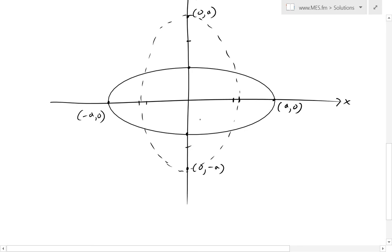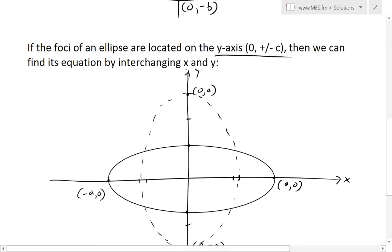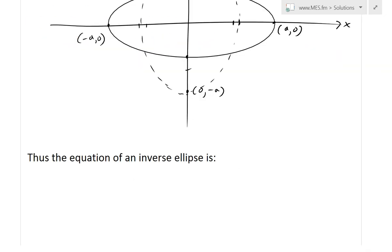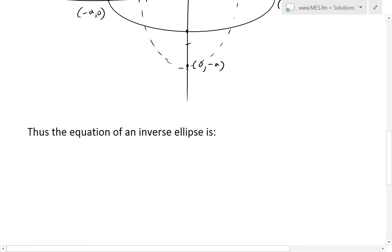So we would just get an inverse of it, and that's basically interchanging x and y. That's basically the equation of an inverse ellipse becomes, so now instead of x, we write y, so y squared over a squared plus x squared over b squared equals 1.